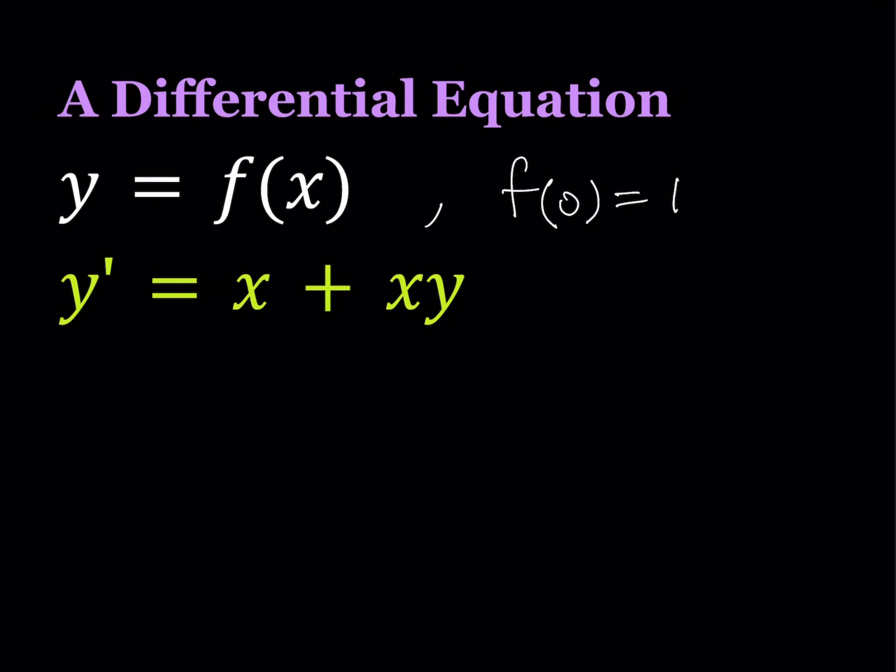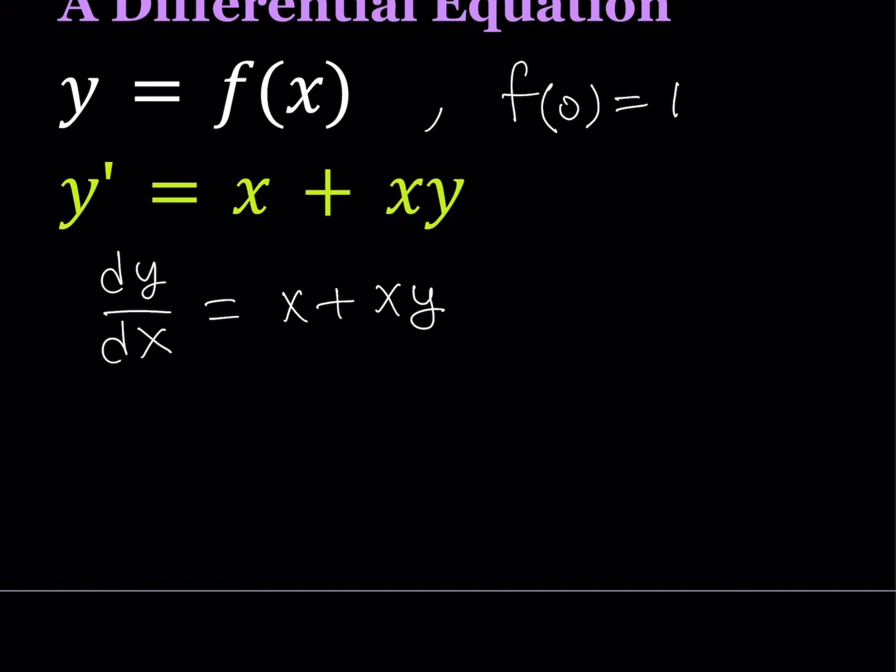First of all, I'm going to write y prime as dy over dx, which indicates that I'm differentiating y with respect to x. And since y is a function of x, this makes sense, right? On the right-hand side I'm just going to write it as x plus xy for now, and later on I'm going to work it out. My next step is going to involve putting the dy and dx on either sides. Let's go ahead and multiply both sides by dx, and let's write the expression first, and then times dx.